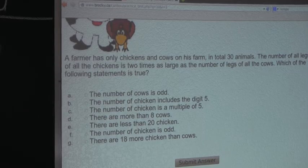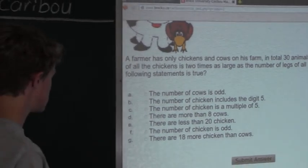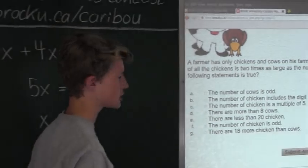Well this is correct because 24 minus 6 equals 18. So G is the answer. There are 18 more chicken than cows.